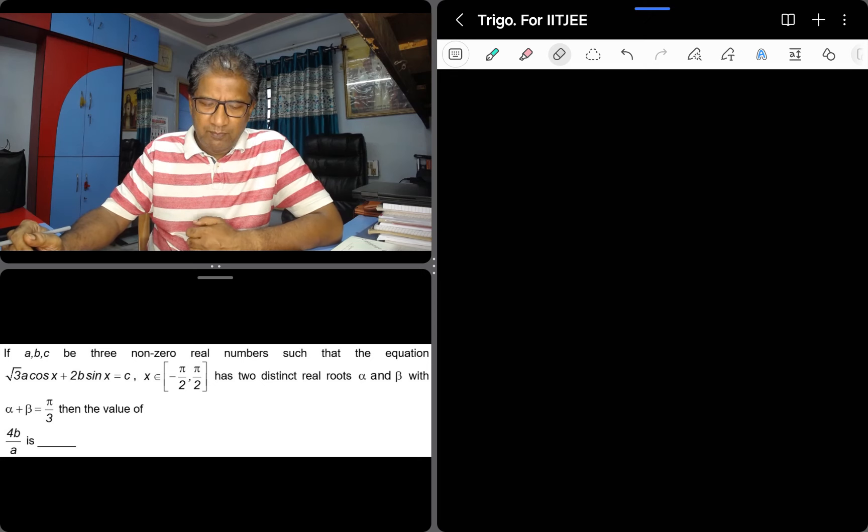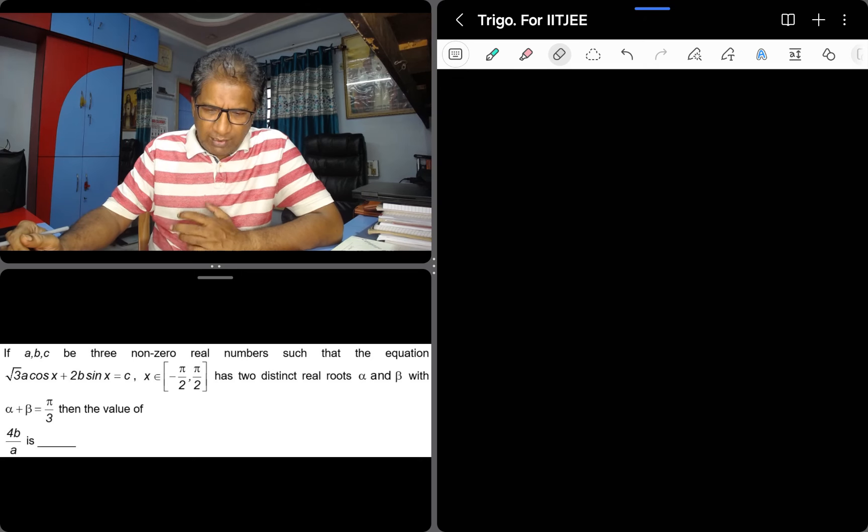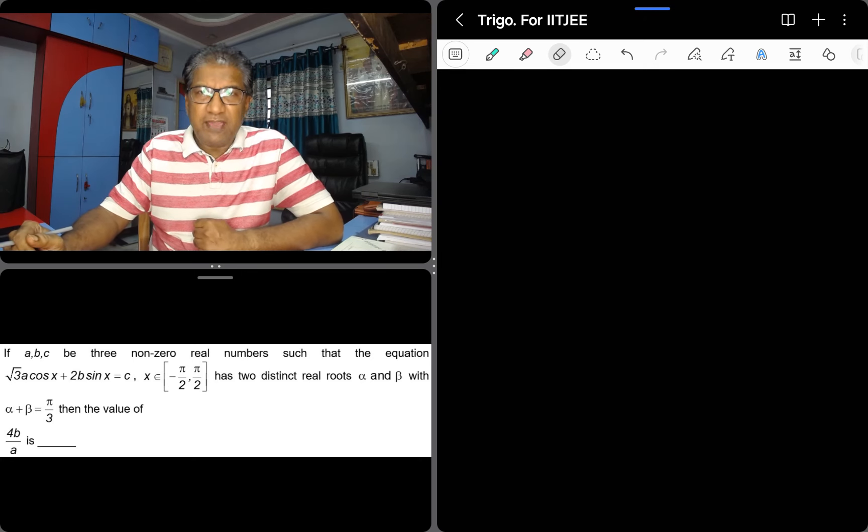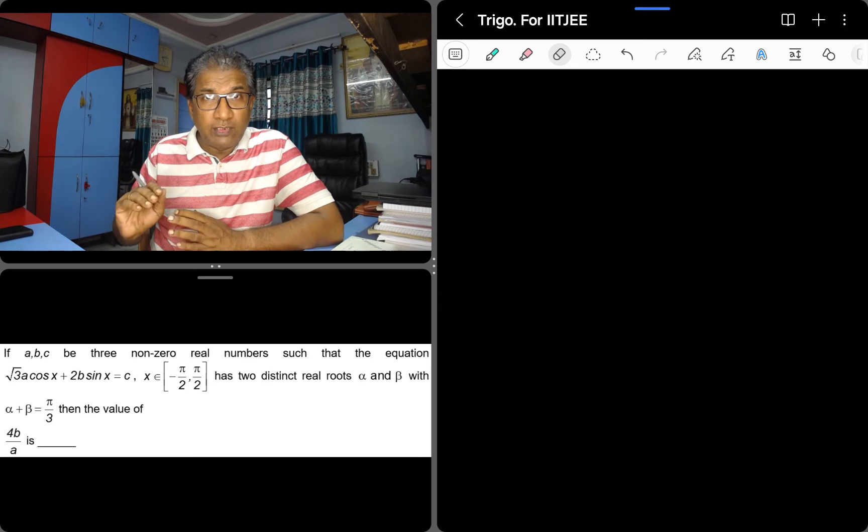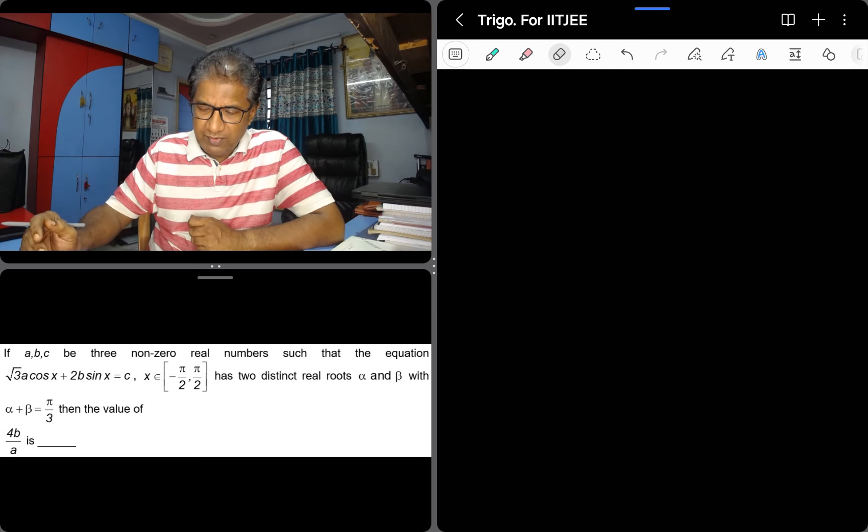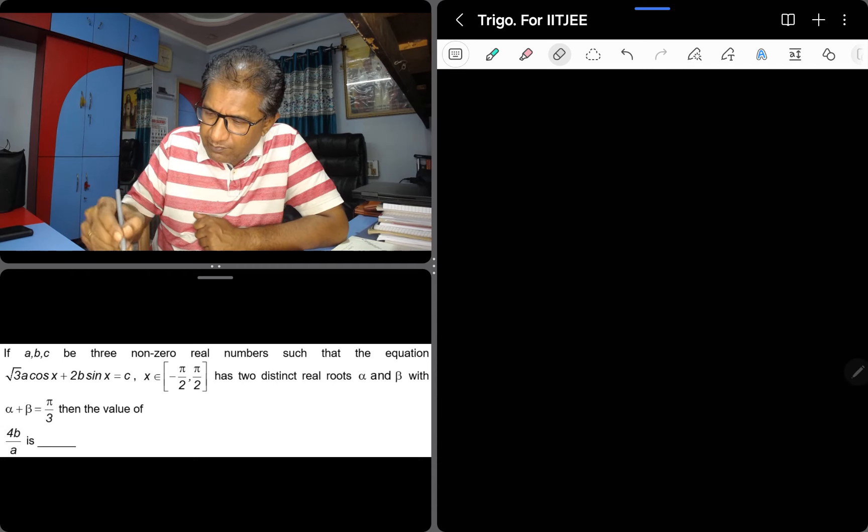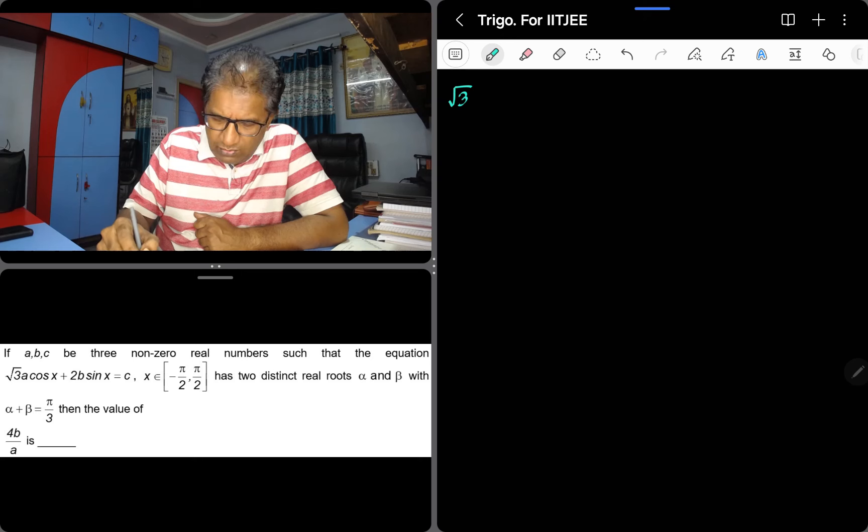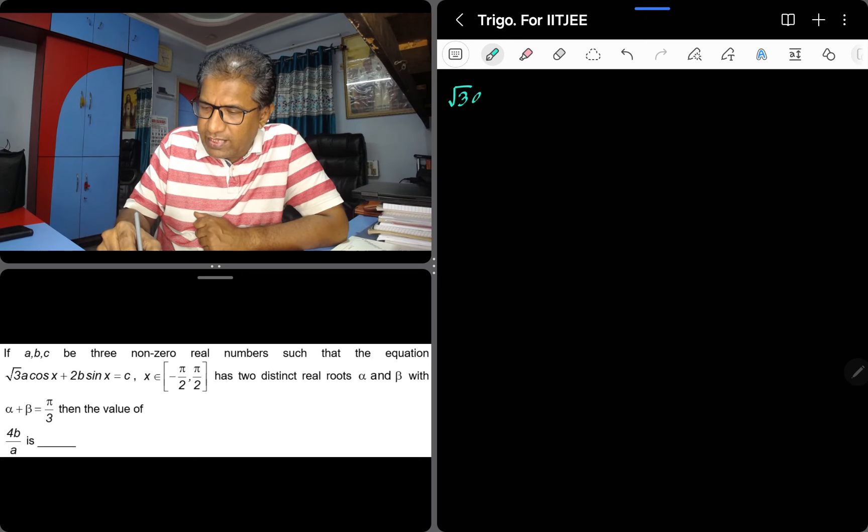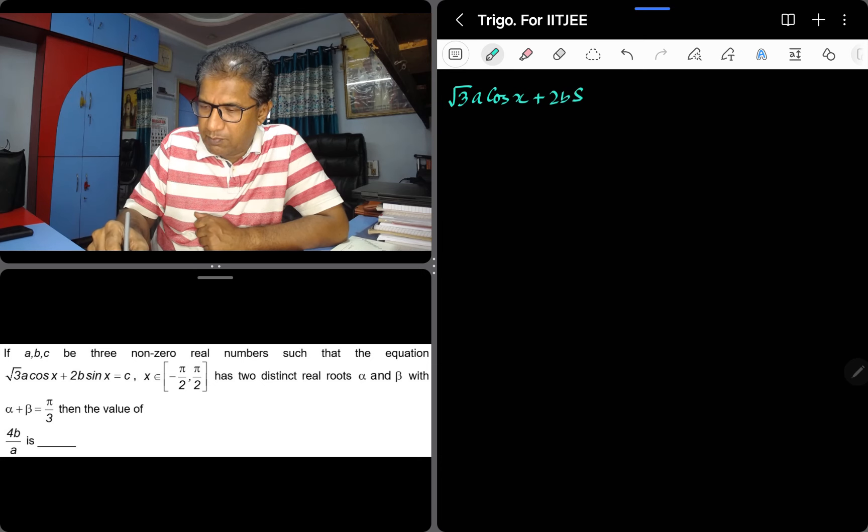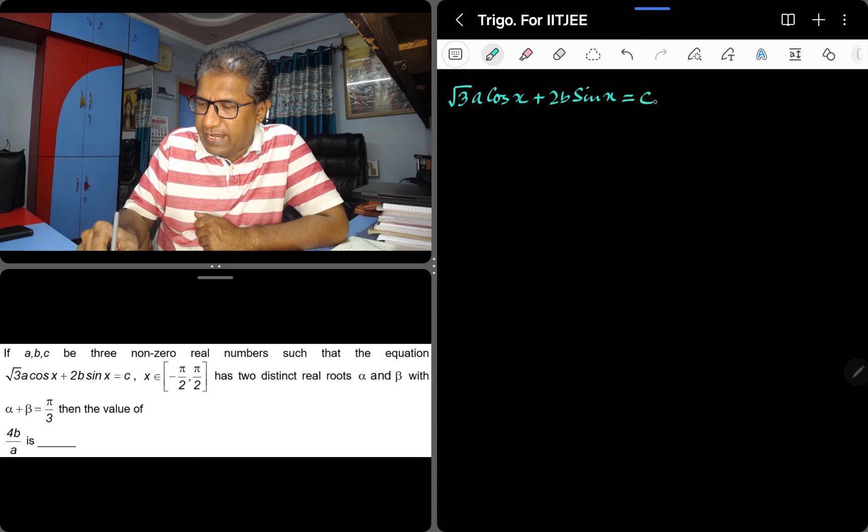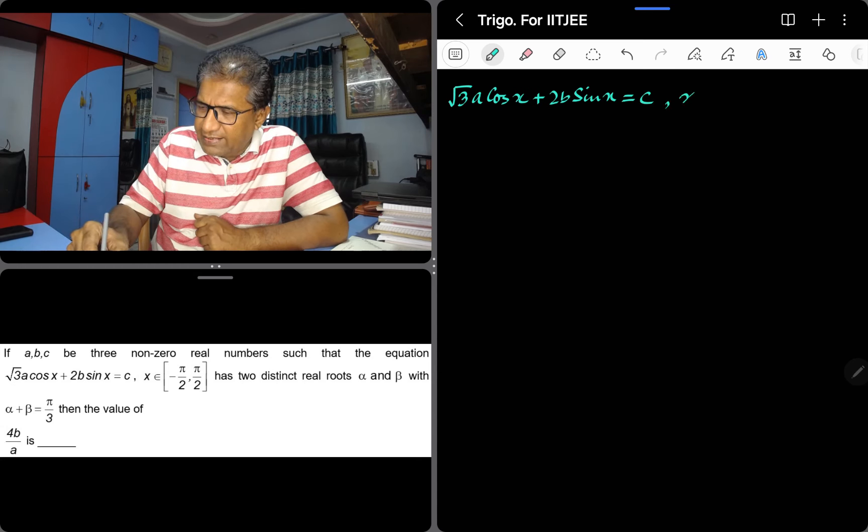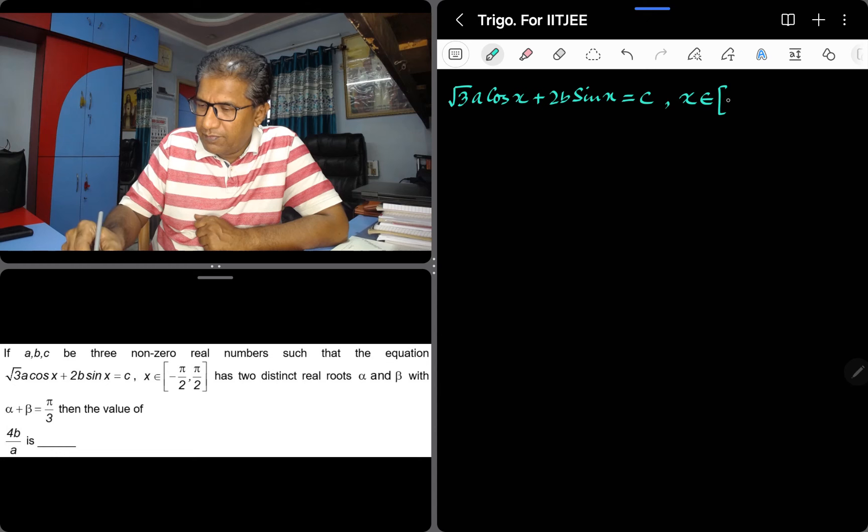This is a trigonometry sum mixed with quadratic equation. The question is: if ABC be three non-zero real numbers such that the equation root 3a cos x plus 2b sin x equals c, and here your x is lying between minus pi by 2 to pi by 2.